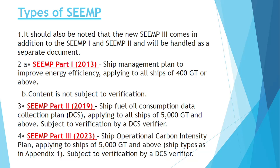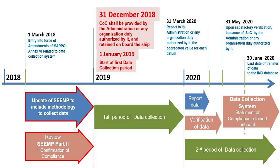After that comes SEEMP Part 2, which came in 2019. SEEMP Part 2 basically came up with the IMO DCS — IMO DCS is applicable for all ships of 5000 GT and above. The IMO DCS states that on 1st March 2018, MARPOL Annex VI amendment was done and the IMO DCS was implemented. It entered into force on 1st January 2019, so before entering into force you needed to update your SEEMP to contain what method you are going to follow to monitor fuel consumption data.